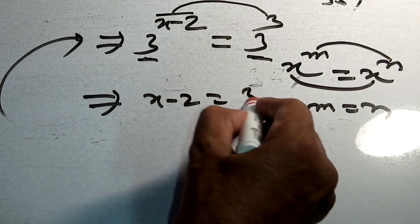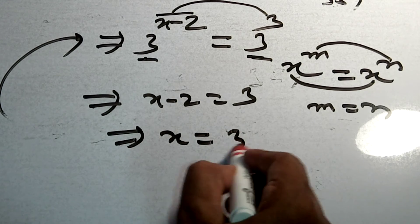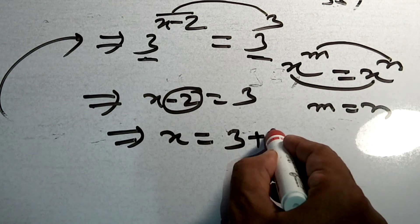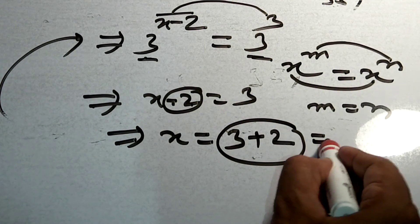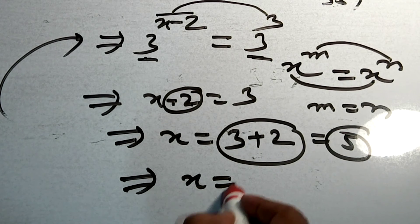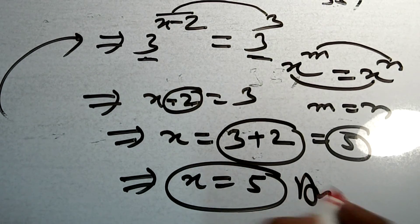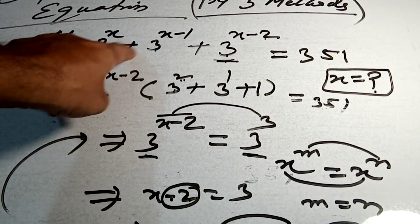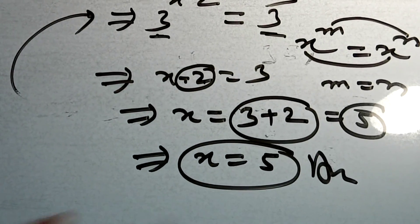Here the base of both sides is 3, so the powers must be equal. This means x minus 2 equals 3, therefore x equals 3 plus 2, which equals 5. The final answer is x equals 5 for this exponential equation: 3 to the power x plus 3 to the power x minus 1 plus 3 to the power x minus 2 equals 351.